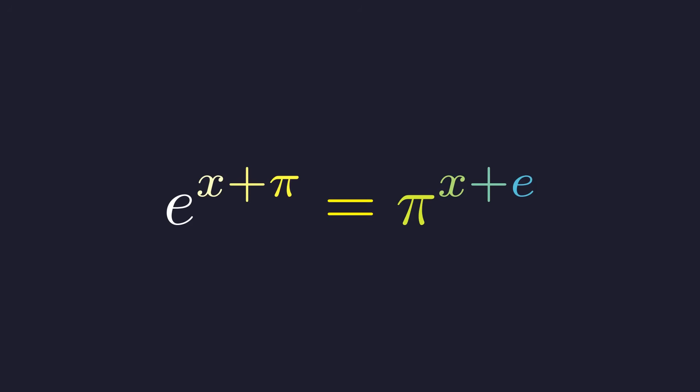Here's a beautiful equation that pits two of mathematics most famous constants against each other. We have e to the power of x plus pi equals pi to the power of x plus e. It looks intimidating at first, but as we'll see there's a surprisingly elegant solution hiding within.